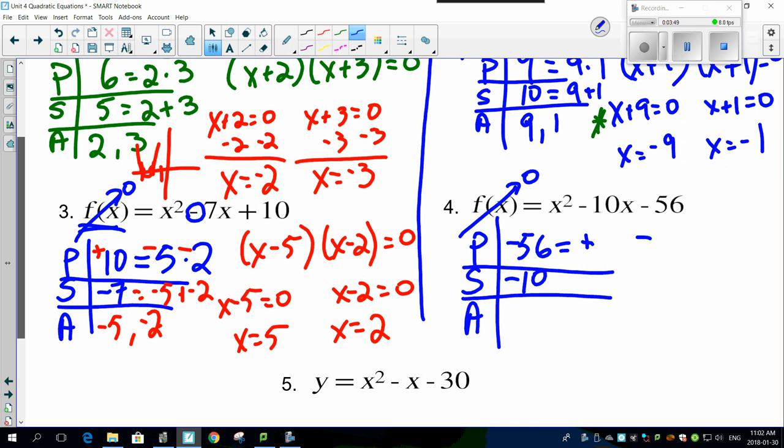Now here's the dilemma: what two numbers multiply to give me -56? Well, one of them's got to be positive and one of them's got to be negative, and you got to figure out which ones. So I'm just going to do this for you and show you: the numbers are 4 and 14.